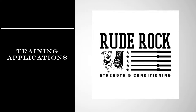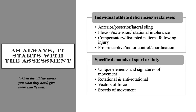Let's get into some training applications. As always, it starts with the assessment. When we talk about the fascial and sling stuff, it's no different than anything else. How do you know when you need to program an RDL versus something quad dominant for somebody? You look at their assessment, you look at what they show you. When the athlete shows you what they need, give them exactly that — don't overthink it.